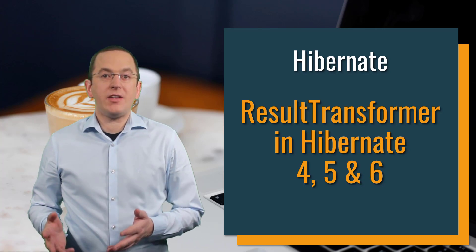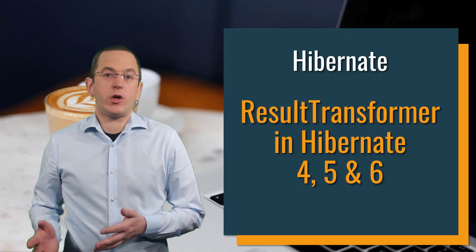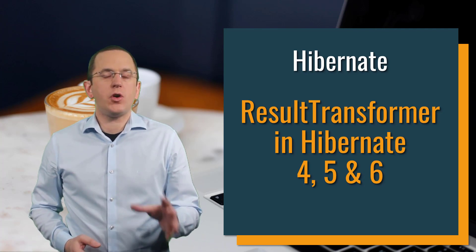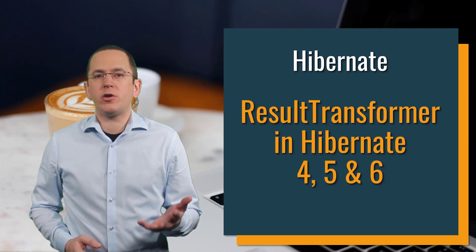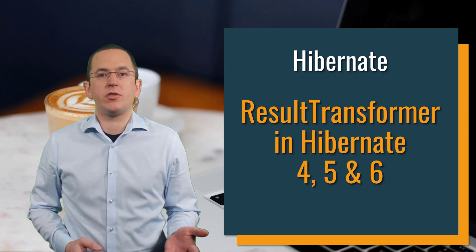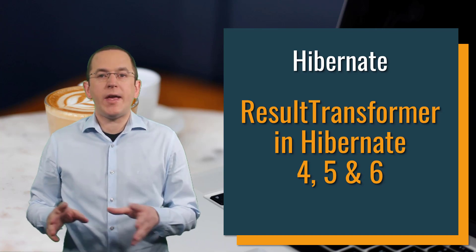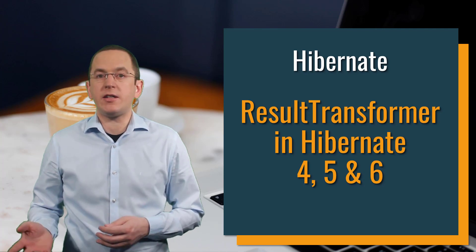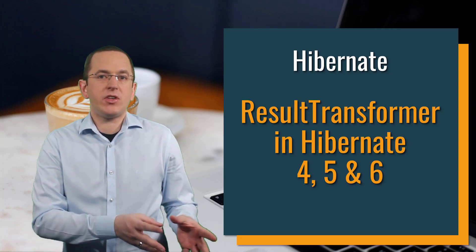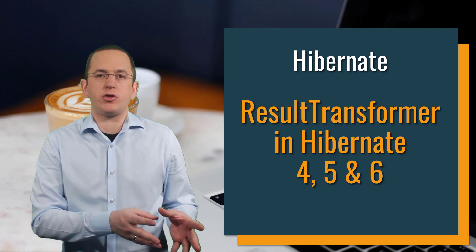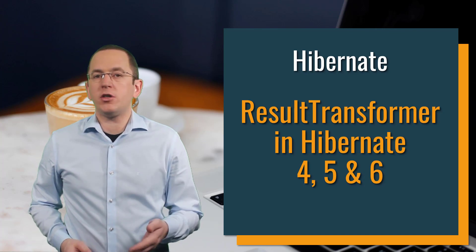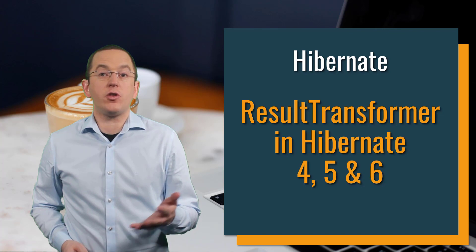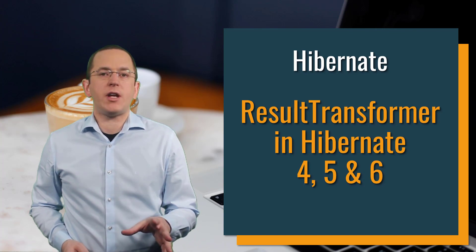Hibernate implements JPA standardized constructor expressions and SQL result set mappings to map the results of your queries. It also supports proprietary result transformers. They provide a powerful and flexible way to map the result of your JPQL, criteria, and native SQL queries to a specific object structure — this can be entity or DTO objects, java.util.List or java.util.Map representations of each record, or a custom data structure.